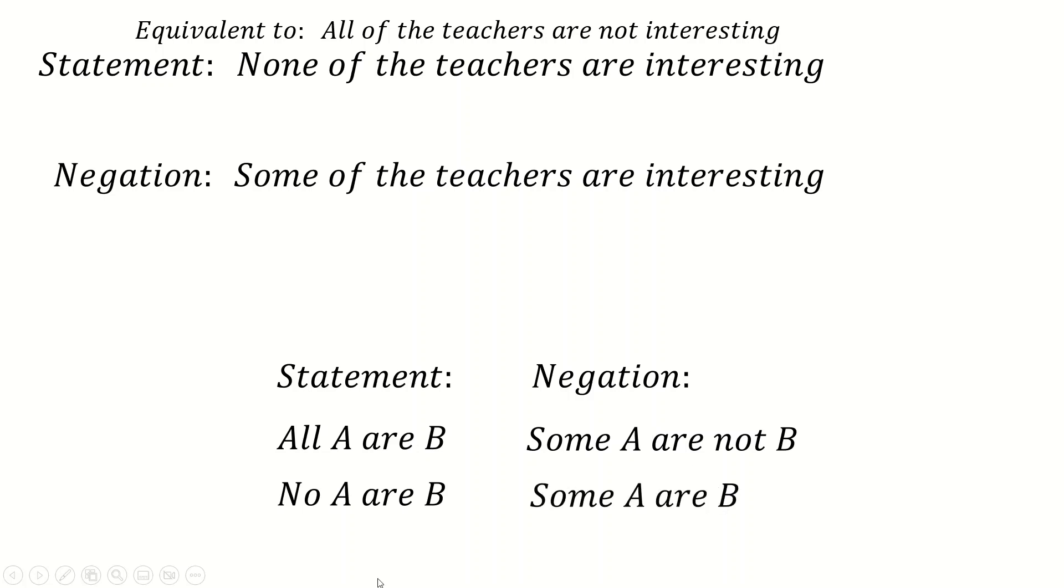If the statement is none of the teachers are interesting, so none A are B, no A are B, the negation is some A are B. You don't need to put a not here, because the not kind of exists here, packaged inside of this no. And then you have a not not over here, which cancels.